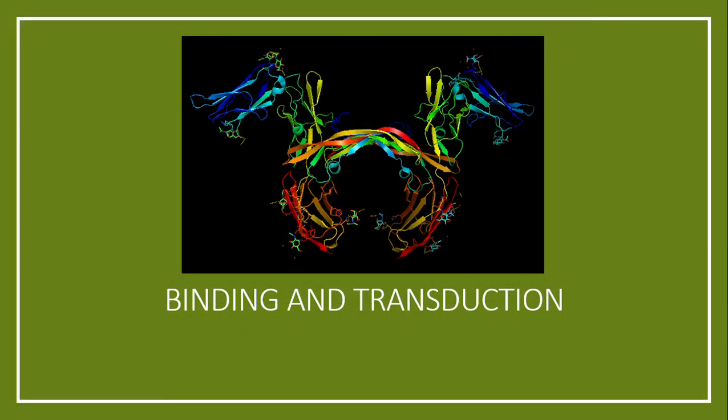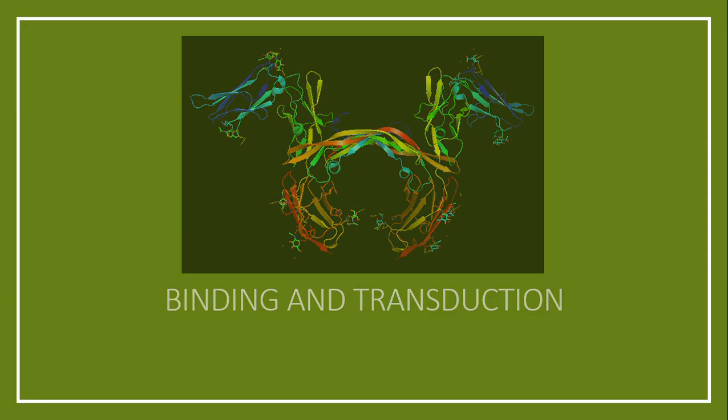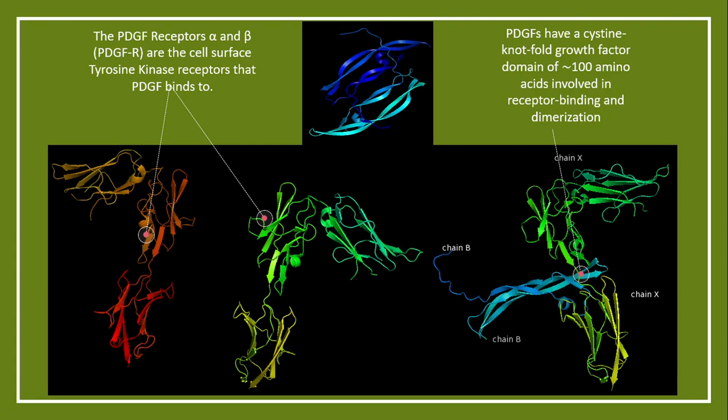How does PDGF perform its very important roles? It involves a type of signaling called autocrine signaling, where the cells that express PDGF have cell surface receptors that PDGF binds to, stimulating intracellular cascades. These receptors are known as PDGF alpha and beta receptors, and they are tyrosine kinase receptors.